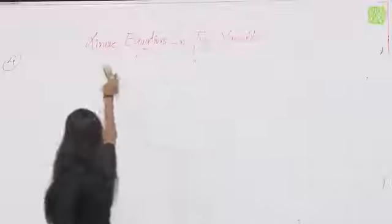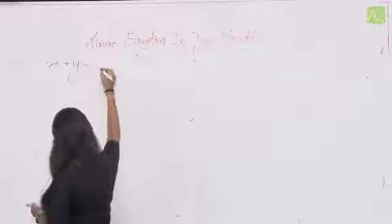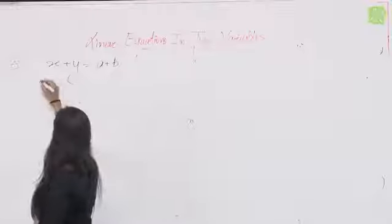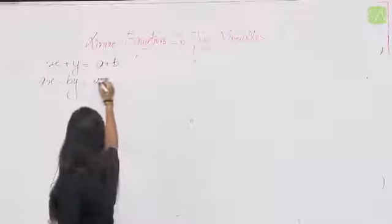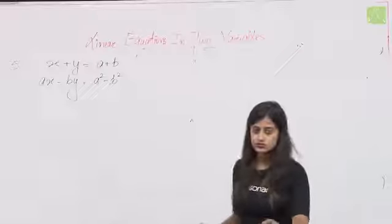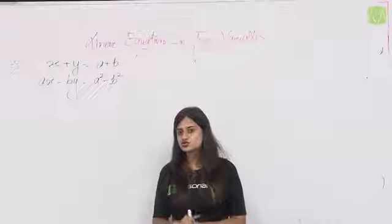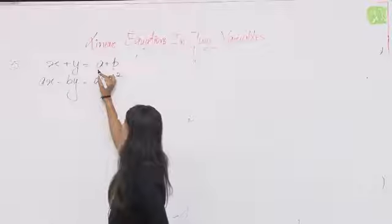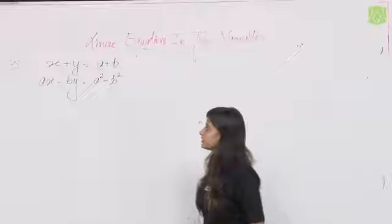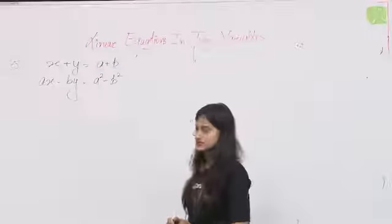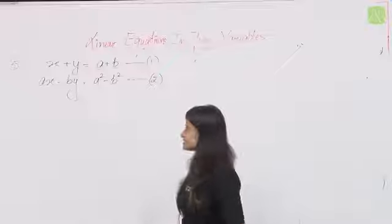Fifth question: x + y = a + b and ax − by = a² − b²। यह दो equations हैं जिनमें coefficients a और b के form में दिए हैं। लेकिन variables सिर्फ x और y हैं। a और b constants की तरह काम कर रहे हैं। Equation 1 और equation 2 लेते हैं।